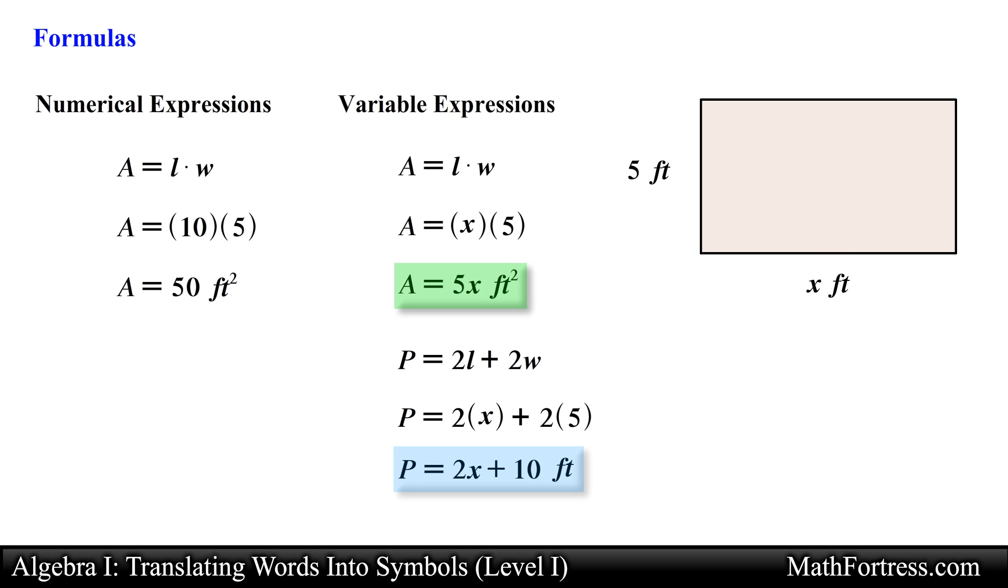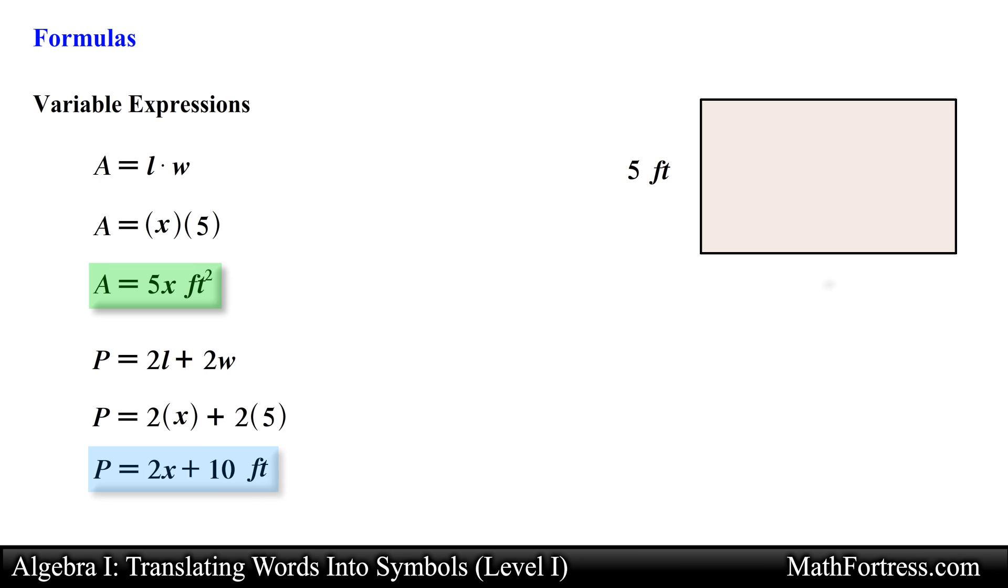The reason why we want to leave our answer in terms of the variable is because by doing this we can generate all the areas and perimeters of a rectangle with width 5 and any length that we would like to have. So if I wanted to know the area of a rectangle with width 5 and length of 6 I just take the variable expression 5x and substitute x for 6 and it turns out that it is equal to 30 square feet. In the same manner if I wanted to know the perimeter I take the expression 10 plus 2x and substitute x for 6 and I get 22 feet.